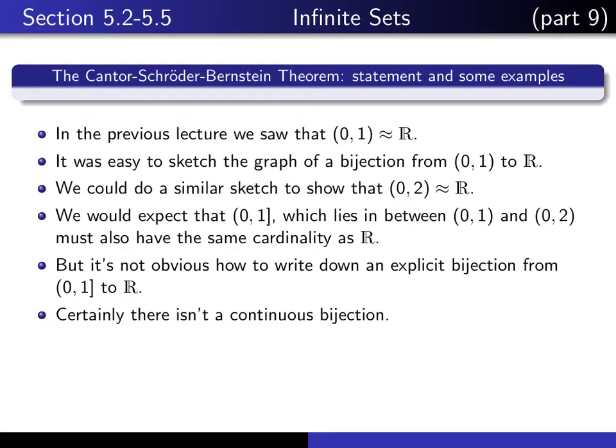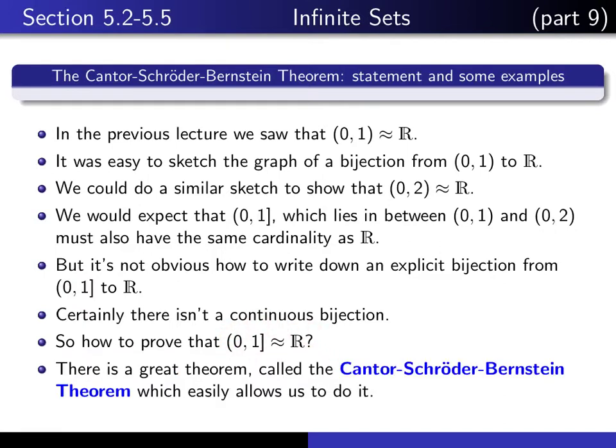So you can't come up with a continuous bijection, and so I think you'll have trouble writing explicitly a bijection from this set to R. So the question is, how do you prove that these two sets have the same cardinality? The answer is that there's a wonderful theorem, it's called the Cantor-Schröder-Bernstein theorem, which is very easy to apply, and which easily allows us to deduce that those two sets have the same cardinality.